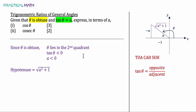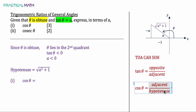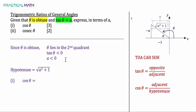For part 1, we solve for cosine theta. Using the CAH part of SOH-CAH-TOA, cosine theta equals adjacent over hypotenuse. The adjacent side is negative 1 and the hypotenuse is the square root of A squared plus 1. Therefore, cosine theta equals negative 1 over the square root of A squared plus 1. This is the answer for part 1.